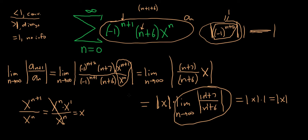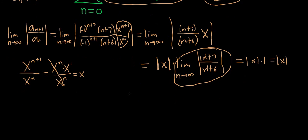We want it to converge, so we force it to be less than 1. We take the absolute value of x and set it less than 1. Whenever you drop the absolute value — super important — you get a plus and a minus. And we know that our series will converge everywhere between negative 1 and 1 based off of this.